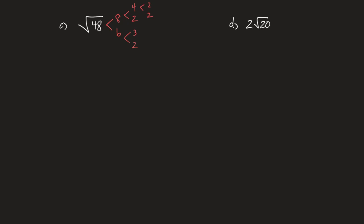The 8 can be broken up into 4 and 2. The 6 can be broken up into 3 and 2. Fight the urge to break the 4 into 2 and 2 — it's not needed, and it makes your factor tree look uglier, which makes it more difficult to simplify. I can stop that branch at 4 because I like it — it's a perfect square. I take the square root of 4, which is 2. I also have two 2s, so when I take the square root of two 2s, I get one 2. The only thing without a pair is that 3, so it's left underneath. Simplify 2 times 2: that's 4. Answer: 4 root 3.